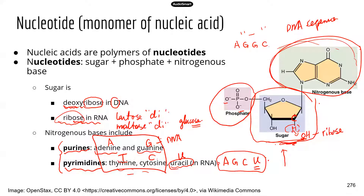Sequences are based on the different bases. A sequence of A, G, G, C is different from A, C, G, C — those are two different sequences. Of course these are short examples just for demonstration. You can see that those four bases can form many different DNA sequences.